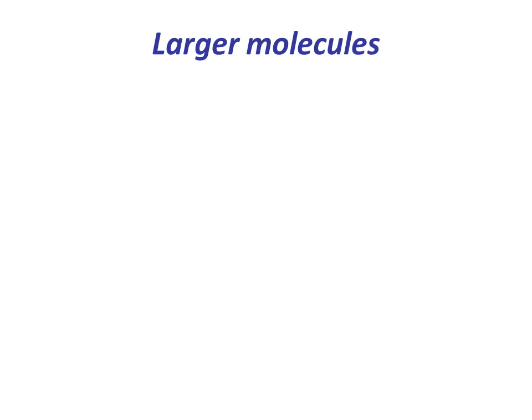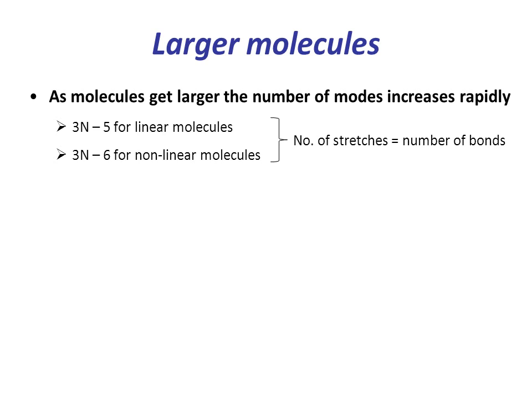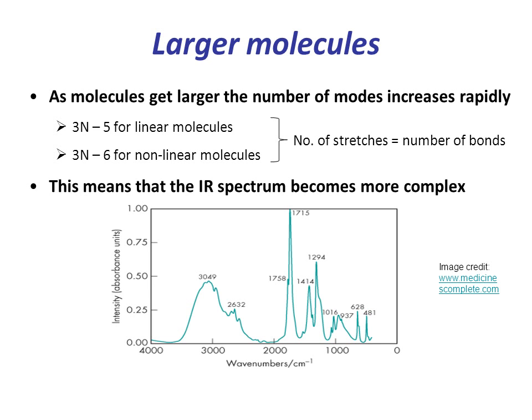So far in this course, we have looked at the vibrational motion and spectra of simple molecules, but what happens as molecules become larger? As you should recall, for a molecule of n atoms, the number of modes is 3n-5 if it is linear, and 3n-6 if it is nonlinear. This means that the number of vibrational modes will increase rapidly, and as a consequence the IR spectrum will become more complex, as illustrated here.